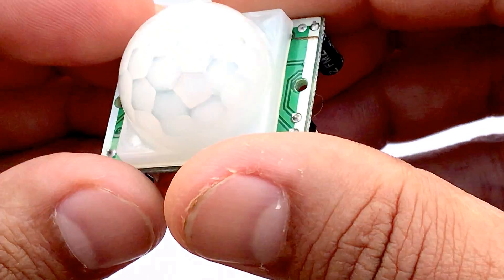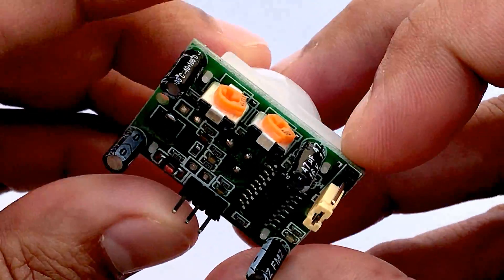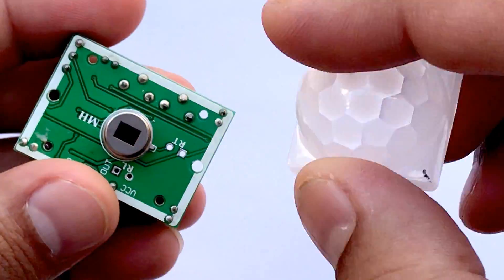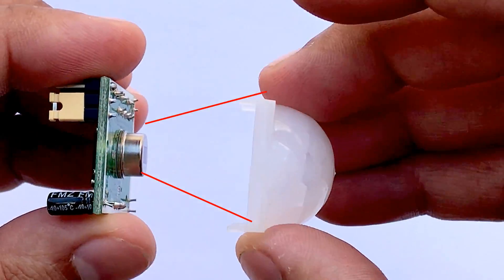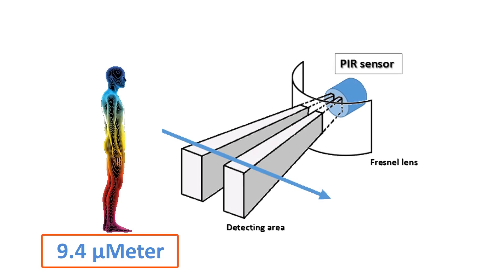As we can see, the sensor has two sides: top or the sensor side, bottom or the component side. The top consists of a specially designed high-density polyethylene cover called Fresnel Lens. This lens focuses the infrared rays to the underlying polyelectric sensor.